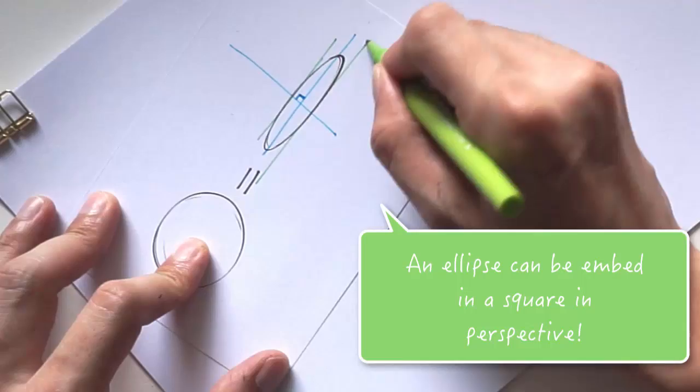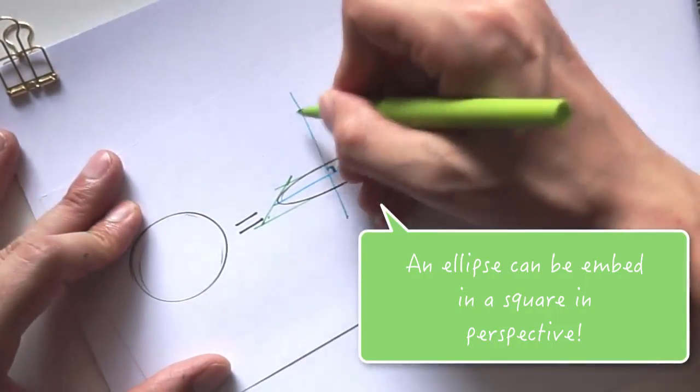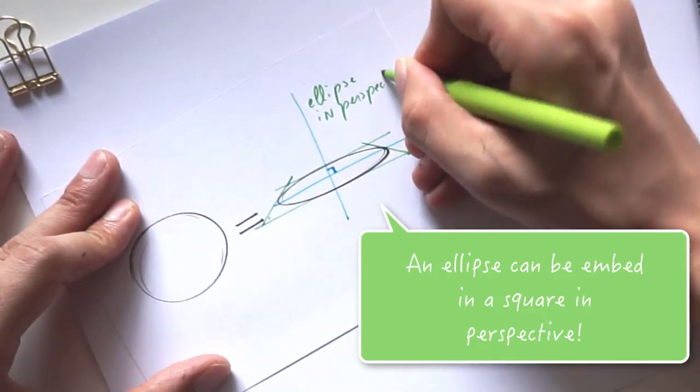An ellipse can be embedded in a square in perspective, like what you can see here in the green lines. Basically, try to imagine a cylinder inside a box, the top of the cylinder.